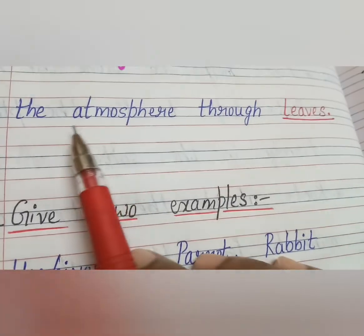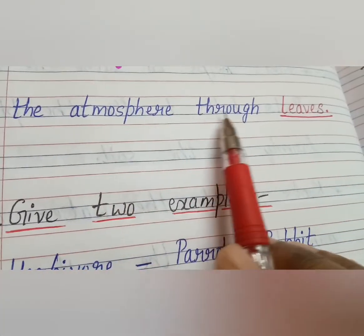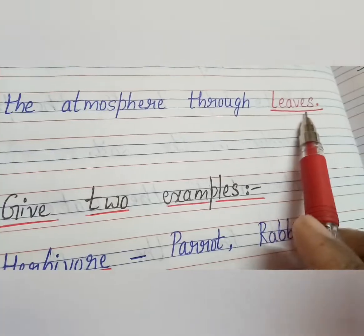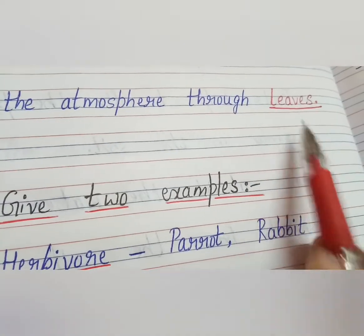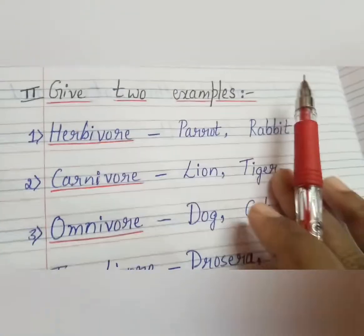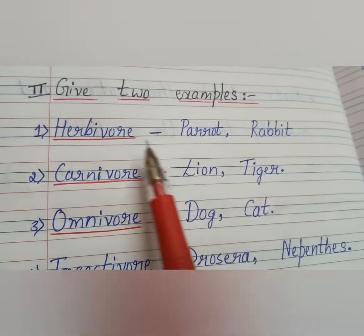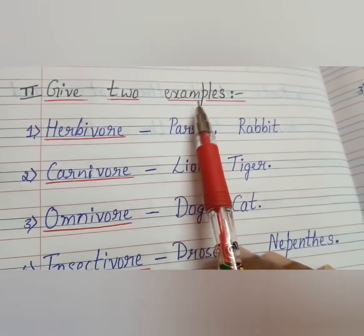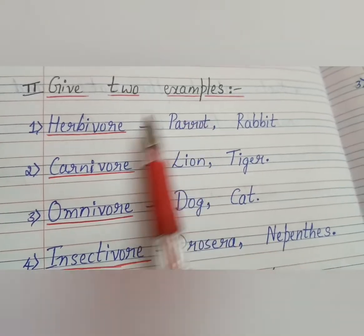Plants release excess water to the atmosphere through dash — answer is leaves. Now, second main: give two examples.